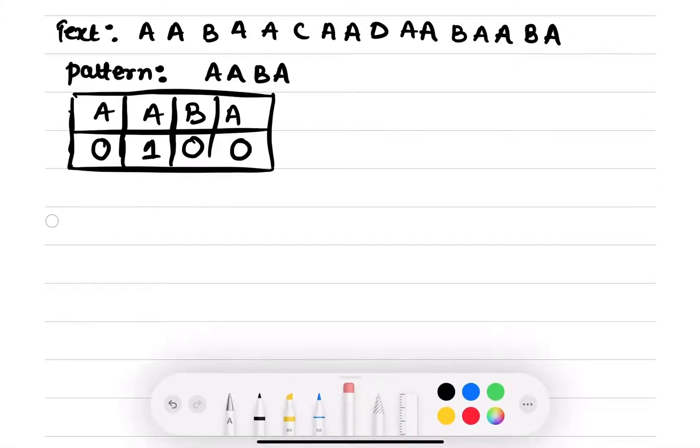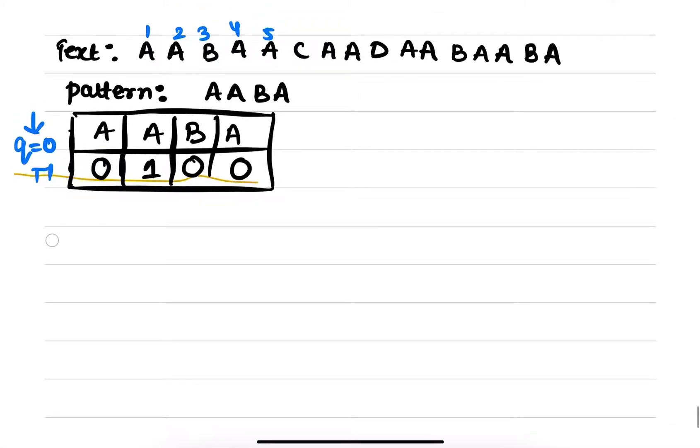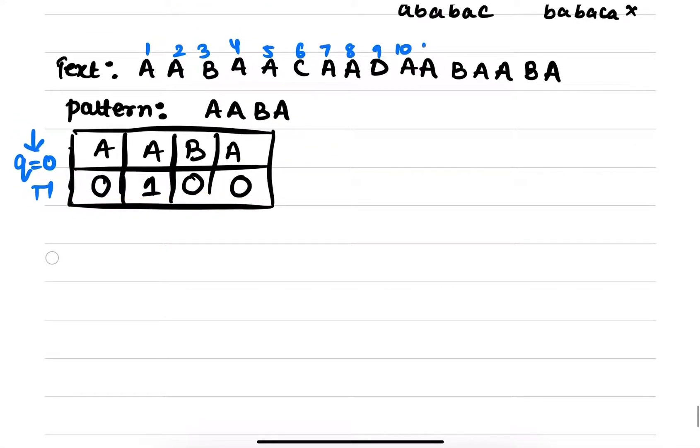Now the second step of the algorithm is to initialize PI table with 0. So my Q is here, right? And my I, so 1, 2, 3, 4, 5, let me write here, 6, 7, 8, 9, 10, 11, 12, 13, 14, 15 and 16. And my I is here, let's see, right?